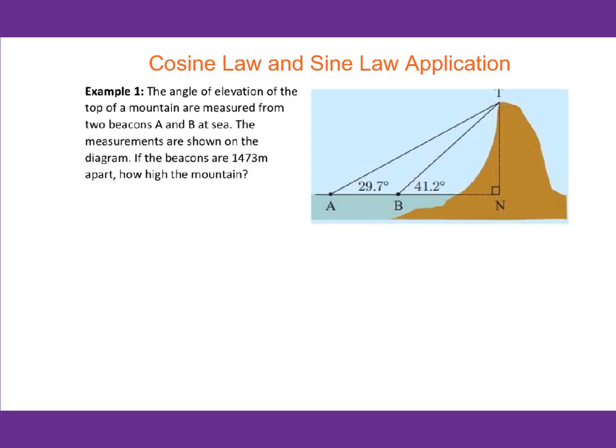The angle of elevation of the top of a mountain are measured from two beacons A and B at sea. The measurements are shown on the diagram. If the beacons are 1473 meters apart, how high is the mountain?